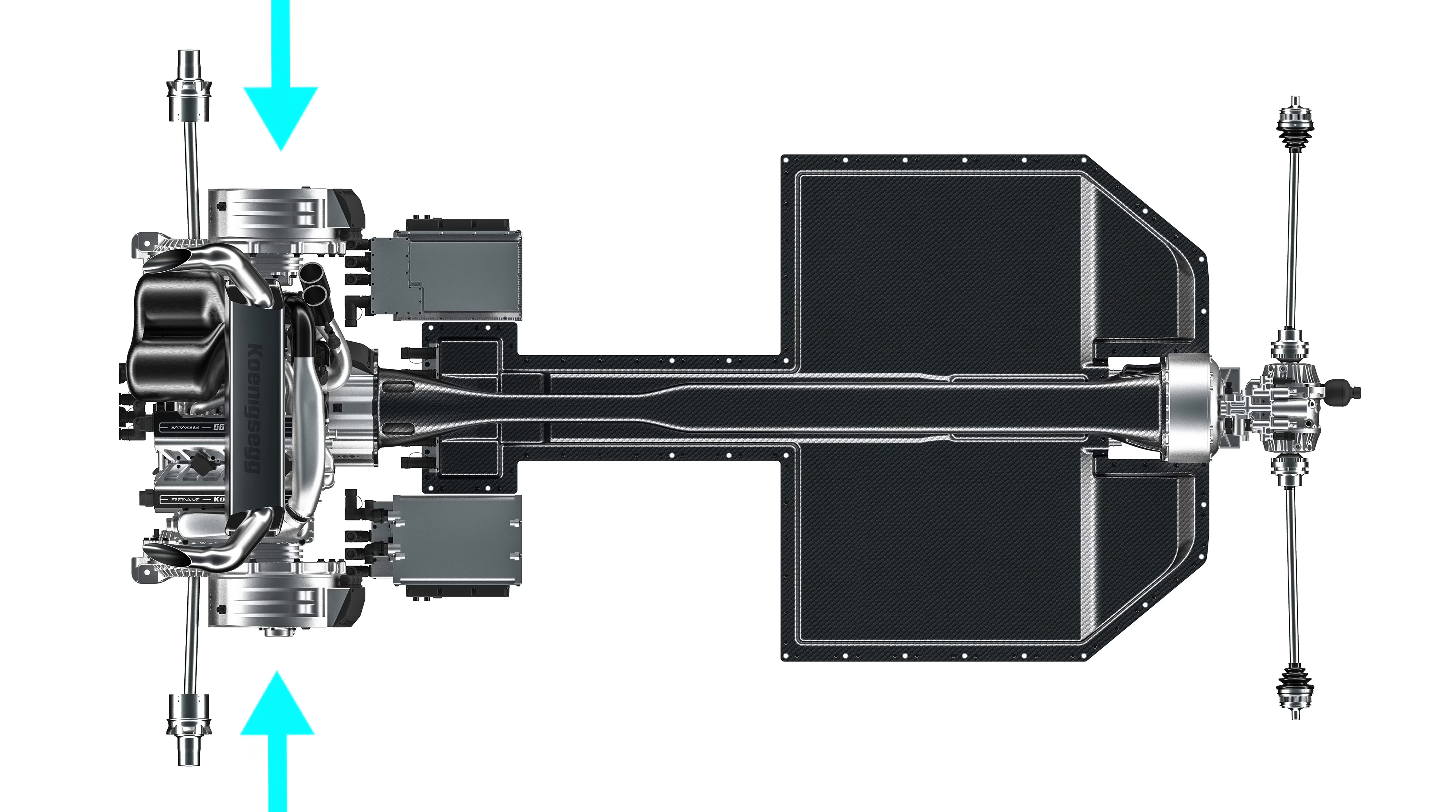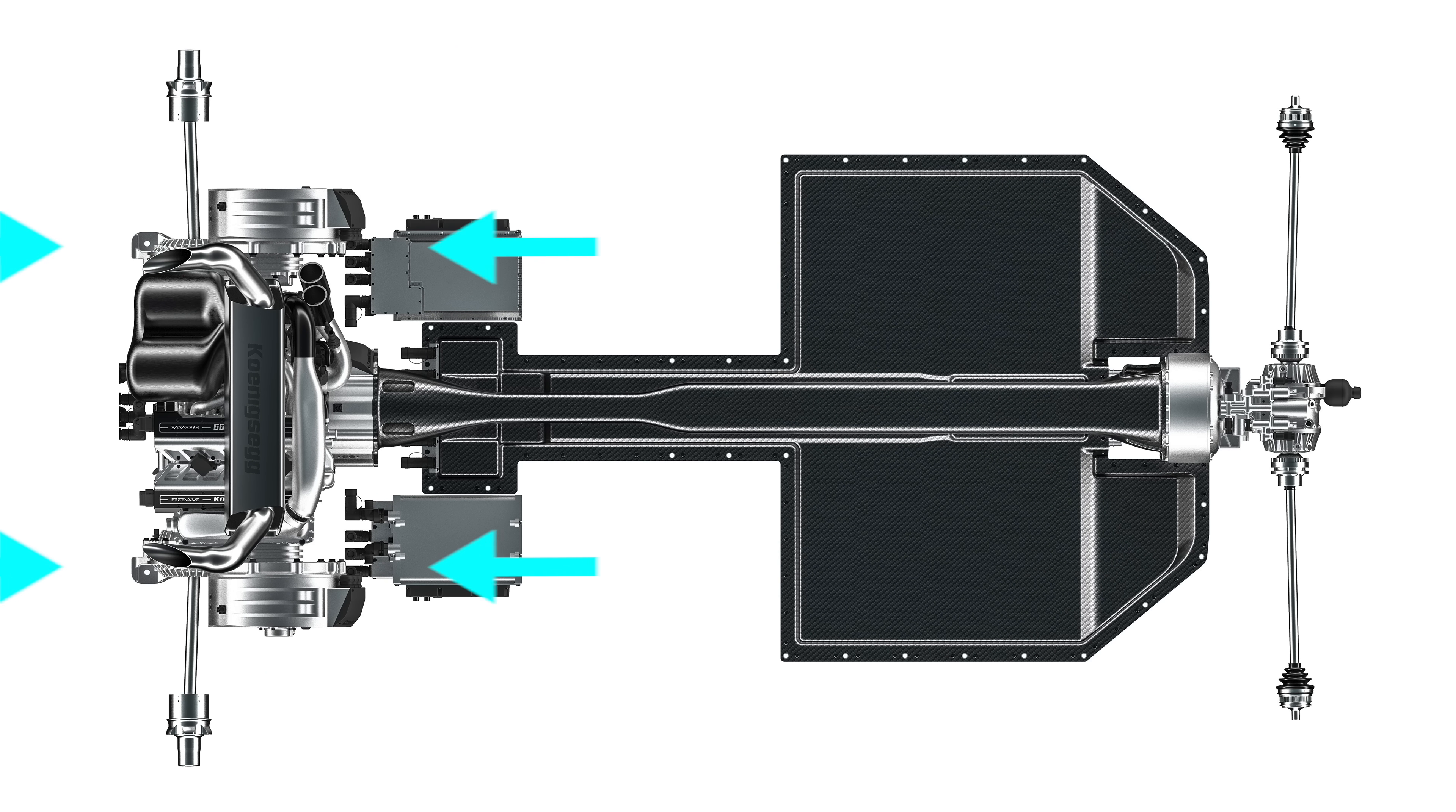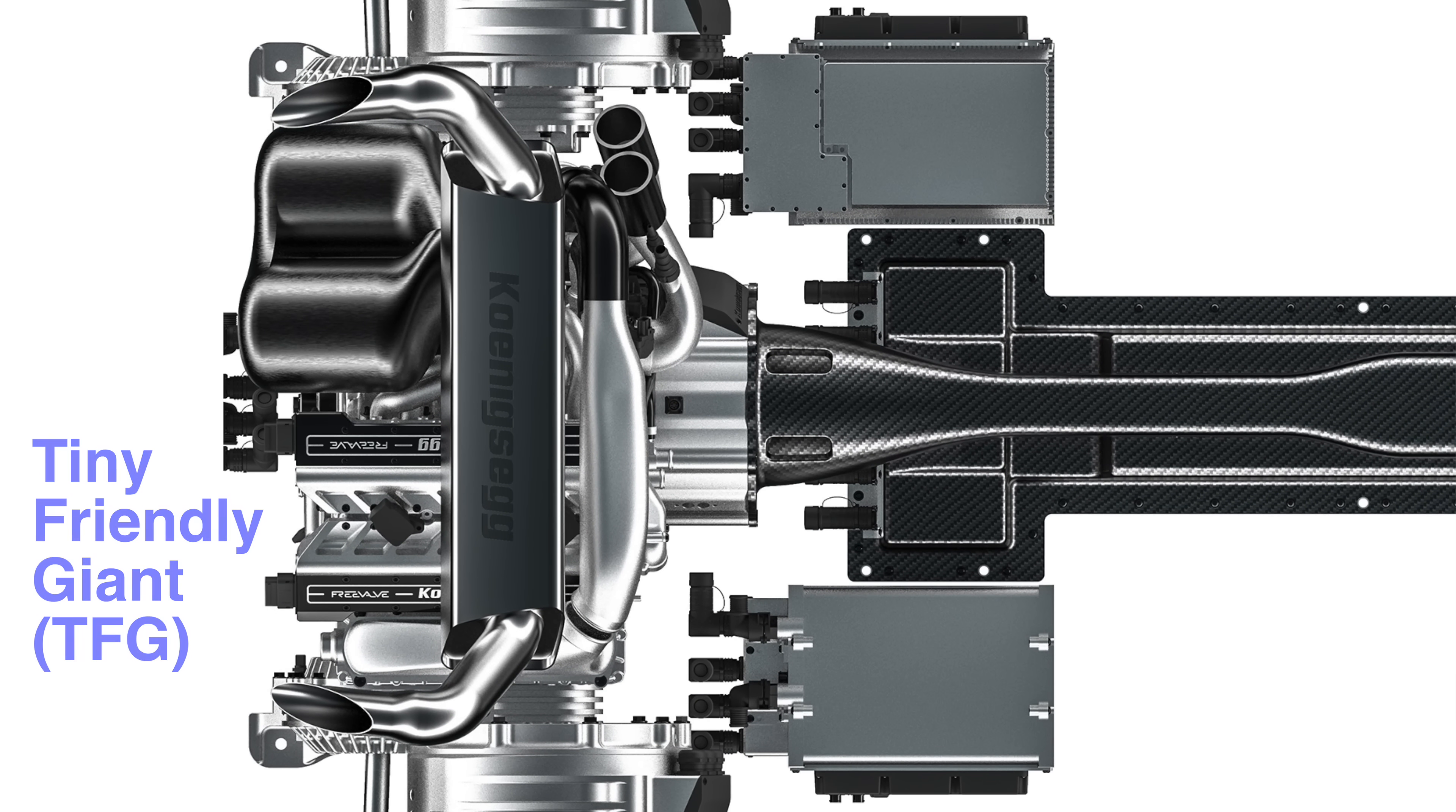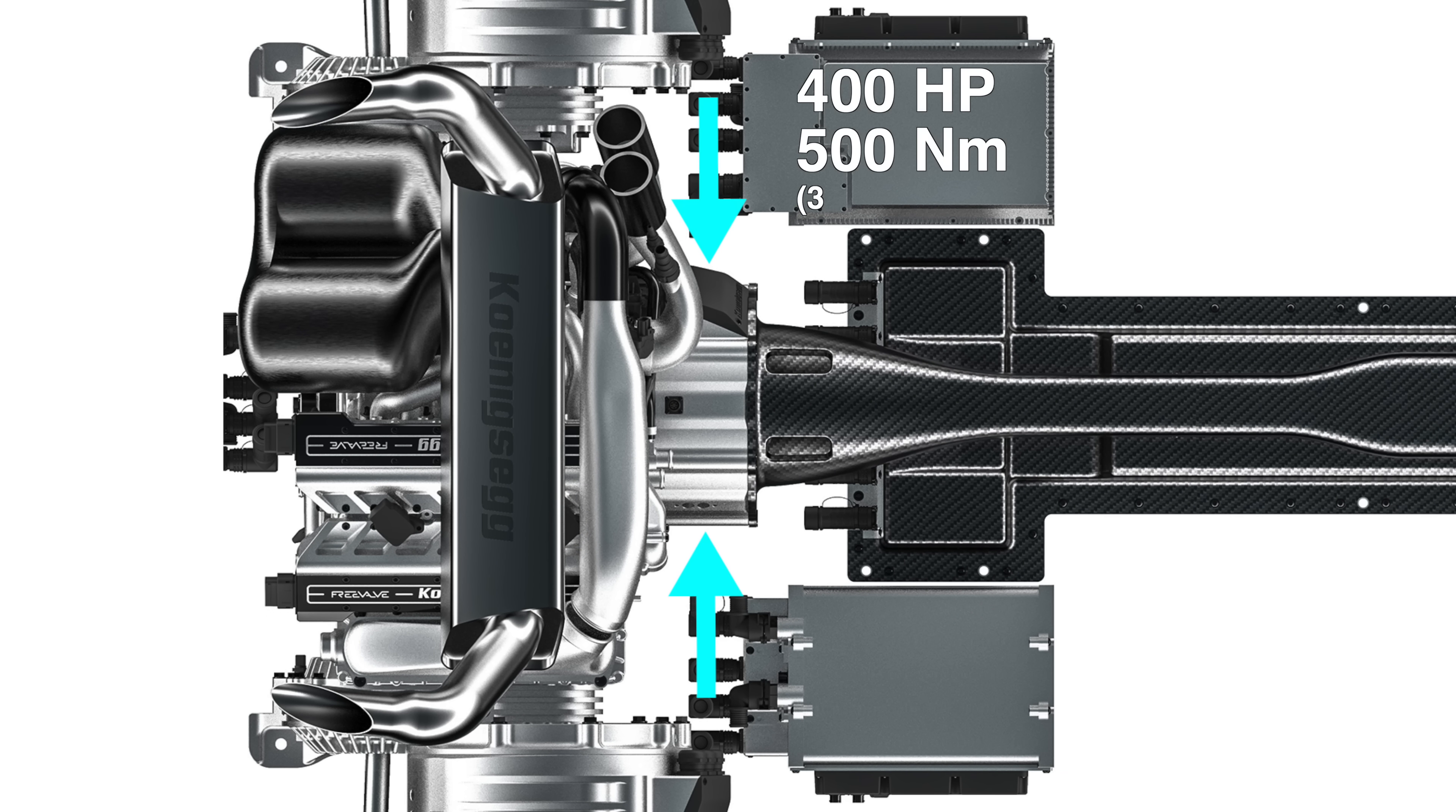At the back of the vehicle are two beefy electric motors. They're each rated for 500 horsepower and 1,000 newton meters of torque and they each have a single speed gearbox before sending power to the rear wheels independently. Sandwiched between the motors is the Tiny Friendly Giant or TFG, our lovely three-cylinder engine which is placed longitudinally. This potent engine is good for 600 horsepower and 600 newton meters of torque and mounted to the end of its crankshaft is another electric motor, good for an additional 400 horsepower and 500 newton meters of torque.